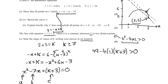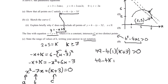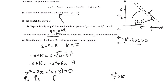Simplifying: 49 minus 4k minus 12 is greater than 0. Bringing 4k to the other side: 37 is greater than 4k, so k is less than 37 over 4. That's the maximum value of k. Combining both bounds in set notation, k is an element of the interval [7, 37/4), where 7 is a closed bracket because k can equal 7, and 37 over 4 is an open bracket because k cannot equal it. That's our final answer.